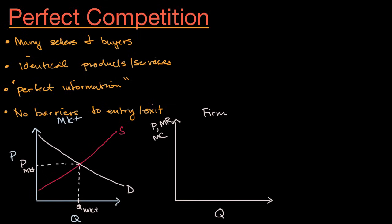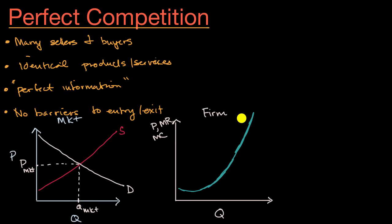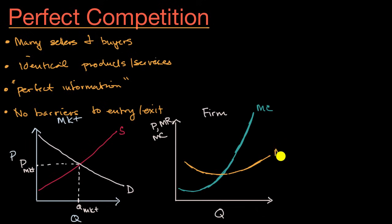First, we can think about the marginal cost for the firm — we've seen this multiple times. The marginal cost might trend upward like this, where at some point every incremental unit is costing more and more to produce. Maybe it's harder to get the resources, harder to get the labor. So that's the marginal cost curve, fairly typical for a firm. And then we can think about their average total cost, which might look something like this — a U-shaped curve. We've seen this multiple times.